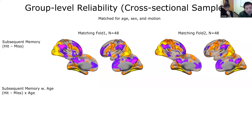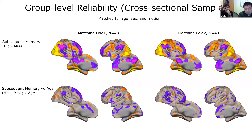Even when looking at regions with age effects, there are some differences, but the patterns are very similar overall. We typically find memory-related activation increasing with age in the inferior frontal gyrus, and we indeed find that in these regions. There are also memory-related increases in deactivation in the default mode network.